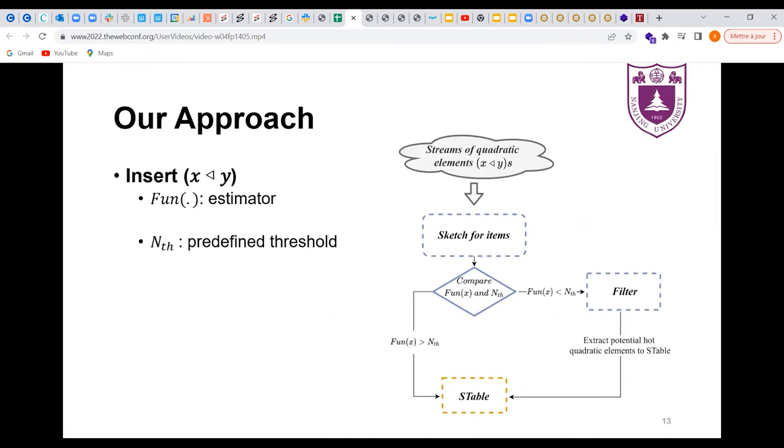Next, let's turn to the insertion. The main idea of insertion is shown in the figure. Here are some notations. f hat represents the estimator. NCH is a predefined threshold for hot items. First, X is inserted into the sketch. If the estimated value of X is smaller than NCH, we insert X, Y into the XFilter. After that, if X just becomes hot, we extract potential hot quadratic elements from the XFilter to STable. If the estimated value of X is larger than NCH, we directly insert X, Y into STable.